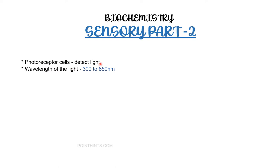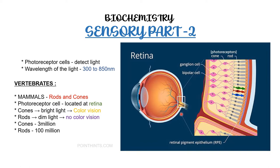Photoreceptor cells help detect light. These cells absorb light at wavelengths of 300 to 850 nanometers and are located at the retina. There are two different types of photoreceptor cells present in mammals: rods and cones. Rods absorb dim light and provide black and white vision but not color vision, whereas cones absorb bright light and provide color vision. There are 3 million cones and 100 million rods present at the retina.